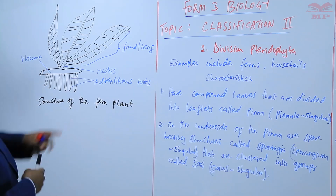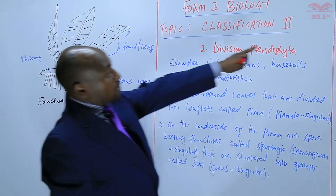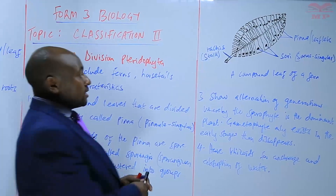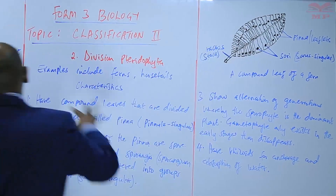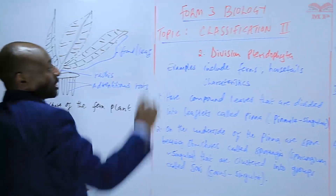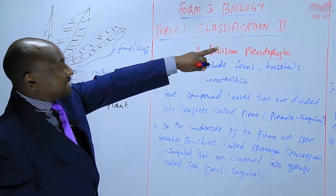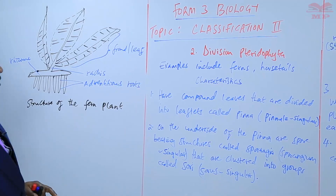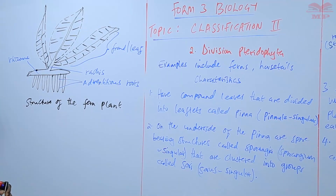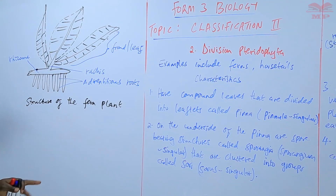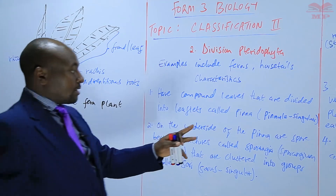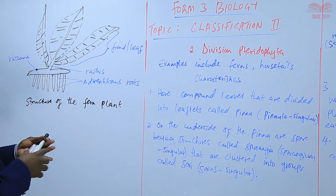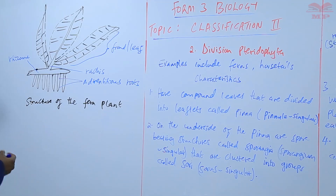We have already seen the underside of the leaves which have the sorai and the pinna. So this is just one leaf removed from the plant — the inner details about the leaf have already been shown in that particular diagram. We have the rhizoids for anchorage and the absorption of water, and these are the adventitious roots.